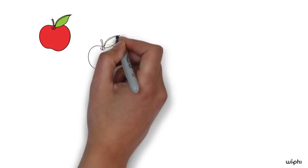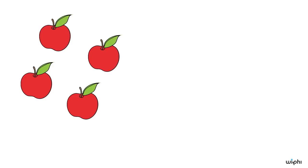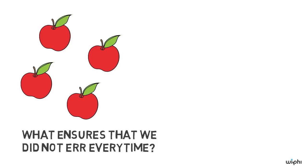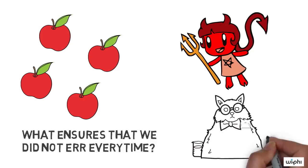And most shockingly, perhaps, not even mathematical beliefs escape Descartes' radical doubt. For how can we be sure that 2 plus 2 equals 4? True, we have often convinced ourselves that we get a collection of 4 objects if we unite 2 collections of 2 objects. But what ensures that we did not err every time we convinced ourselves of this?